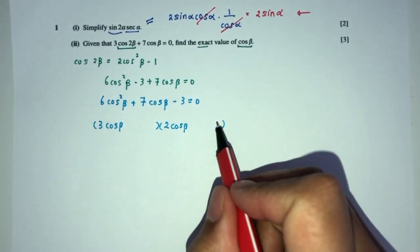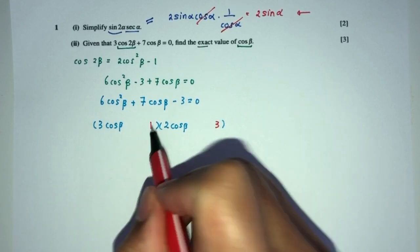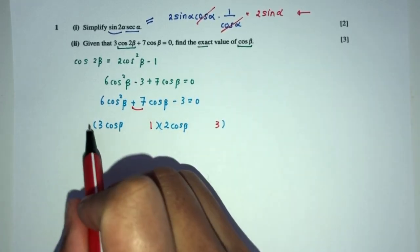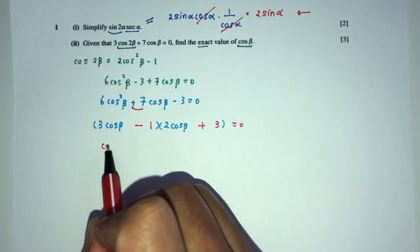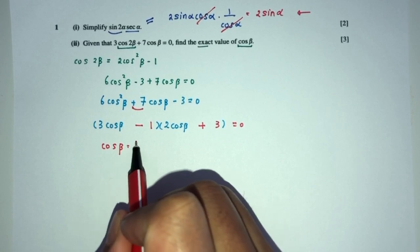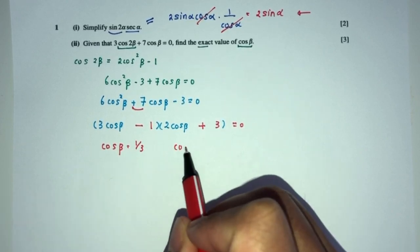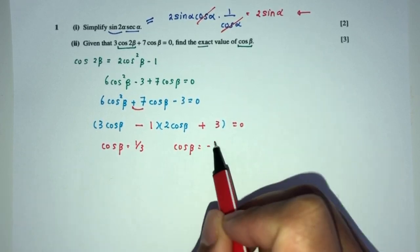We're going to put 3 here and 1 here. To get plus 7, we have to have plus 9 minus 2. Your answer will be cos β will be the value of 1/3 or cos β will be the value of -3/2.